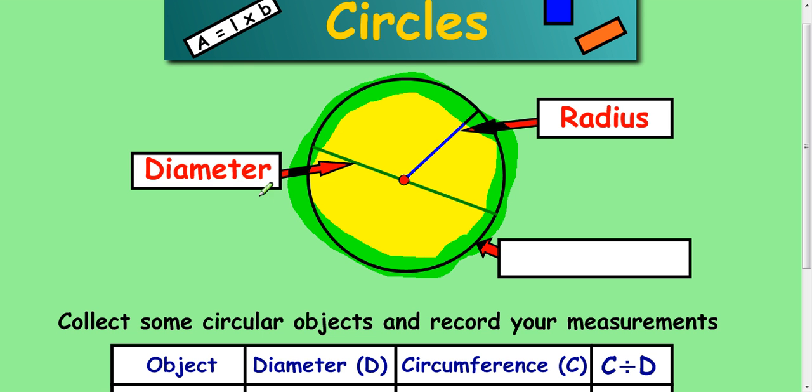Now in most shapes, in fact every shape, this is called the perimeter, the distance around the outside of the shape. But in the circle, it's called the circumference. So it's just a fancy word for the perimeter of the circle.